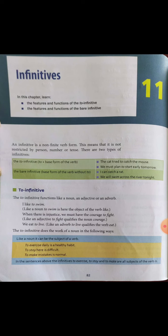The second type is the bare infinitive: the base form of the word without 'to.' For example, 'I can catch a rat' and 'We will swim across the river tonight.' So the two types of infinitives are: first, the 'to' infinitive (to plus base form), and second, the bare infinitive (base form without 'to').